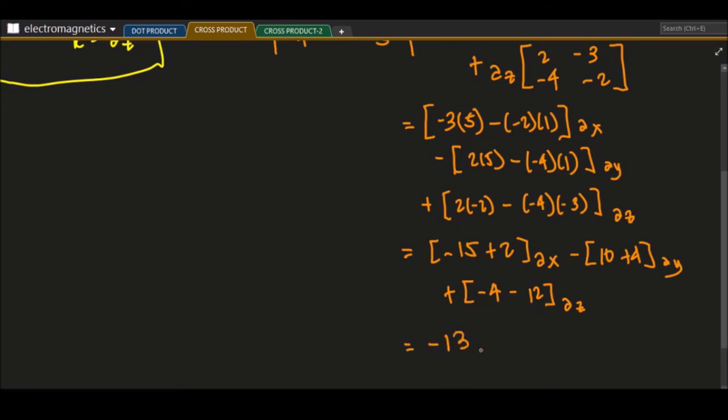Let me just simplify this further. This is negative 13 a sub x, minus negative 14 a sub y, minus 16 a sub z. This is now the answer for vector A cross vector B.